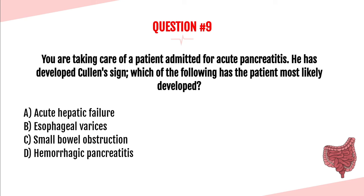Question number nine. You are taking care of a patient admitted for acute pancreatitis who has developed Cullen's sign. Which of the following has the patient most likely developed? A. Acute hepatic failure. B. Esophageal varices. C. Small bowel obstruction. Or D. Hemorrhagic pancreatitis. The answer is D — hemorrhagic pancreatitis.